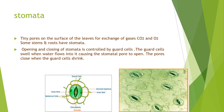The base of the thylakoid is called the stroma. The next factor is the presence of carbon dioxide for the process of photosynthesis. The stomata is the structure which is involved in the exchange of gases.